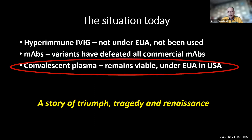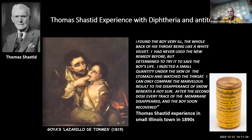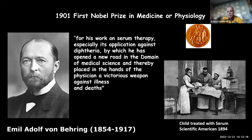Serum therapy was the first effective therapy in medicine, developed in the 1890s. Thomas Shasted, a well-known physician, found a boy very ill with diphtheria — the whole back of the throat like white velvet. He injected a small quantity in the skin of the stomach and watched the throat, comparing the result to the marvelous disappearance of snow under a hot sun. Diphtheria was a horrible disease — parents watched their children asphyxiate in front of them. This led to the first Nobel Prize in medicine, given to Emil von Behring.